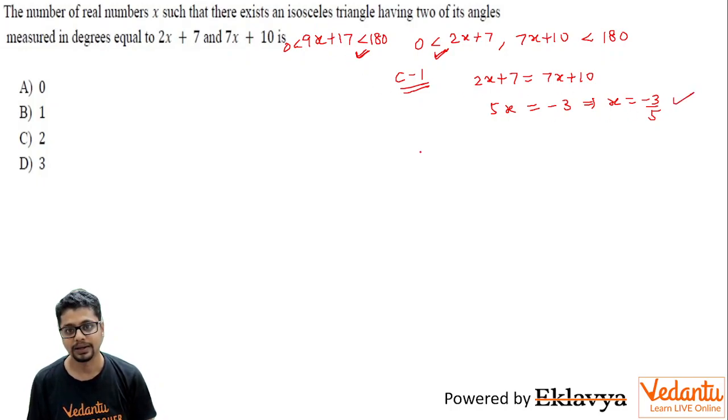So even when you take x to be minus 3 by 5, this expression 9x plus 17 turns out to be less than 180, so this is acceptable. What about the other possibility?